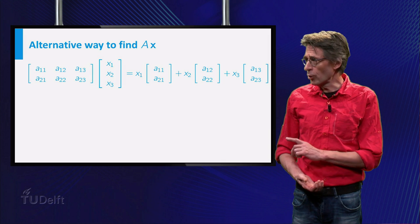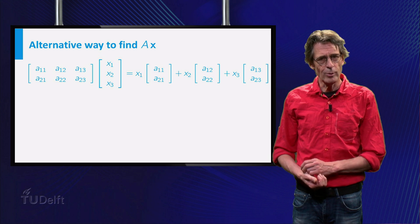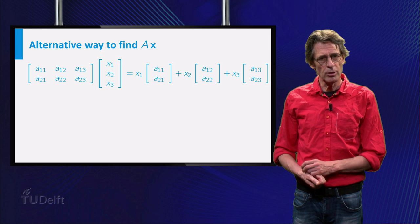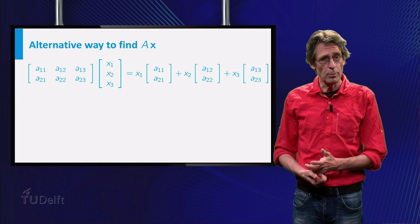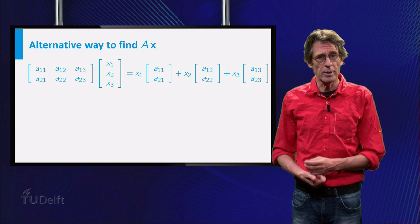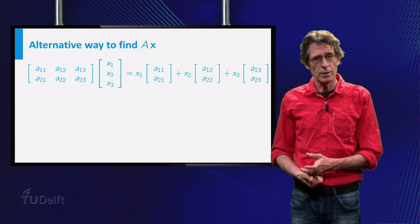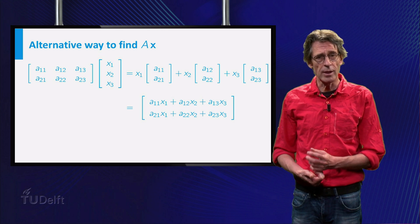have a look at the following example. A general 2x3 matrix A is multiplied with an arbitrary vector in R3. First the product is written as a linear combination of the columns, and next this is written as one vector.